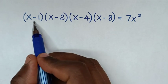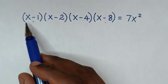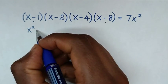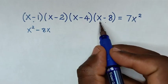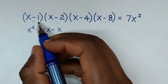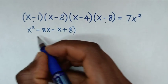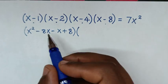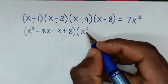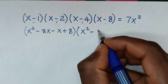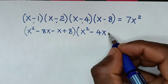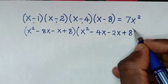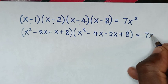we'll take x minus 1 times x minus 8. So x times x is x squared, then x times negative 8 is negative 8x, negative 1 times x is negative x, negative 1 times 8 is positive 8. Then we'll take x minus 2 times x minus 4. So x times x is x squared, x times negative 4 is negative 4x, negative 2 times x is negative 2x, negative 2 times negative 4 is positive 8. This equals 7x squared.